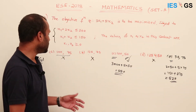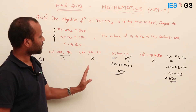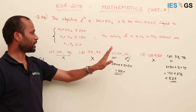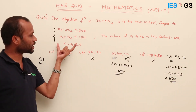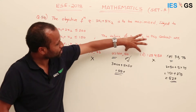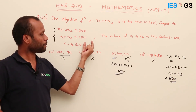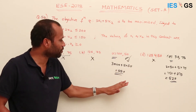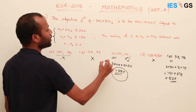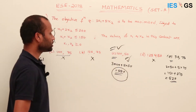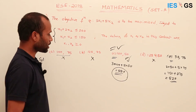First, eliminate options that do not satisfy the constraints. In the original case only one option satisfies all conditions, so we can directly write C as the answer. If multiple options satisfy the constraints, then among those, whichever gives the maximum value of z is the answer. This is the back substitution method. The other way is the normal theoretical graphical method.